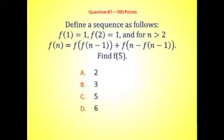Here comes the question. We'll define a sequence as follows: f of 1 is 1, f of 2 is 1, and then for the subsequent terms, for n bigger than 2, f of n is f of f of n minus 1 plus f of n minus f of n minus 1.